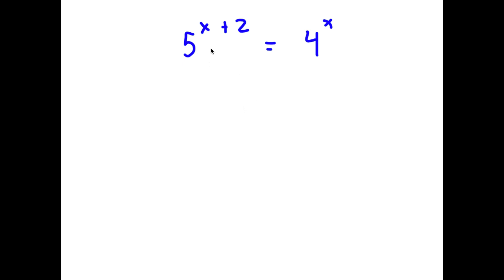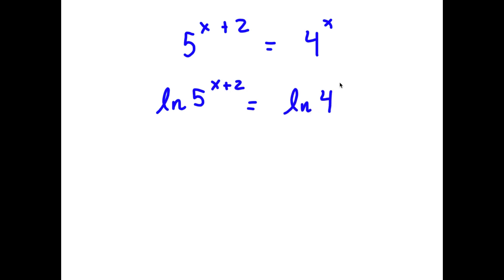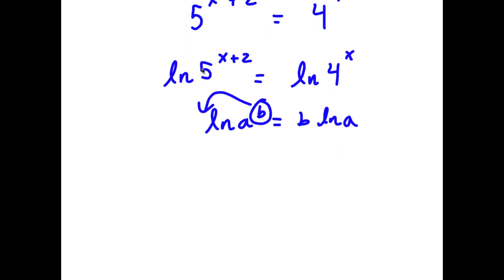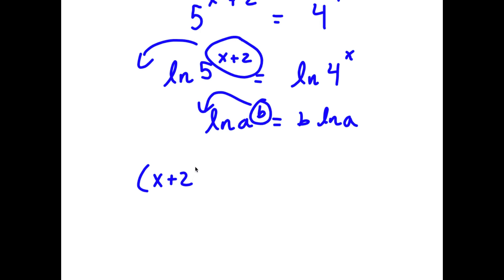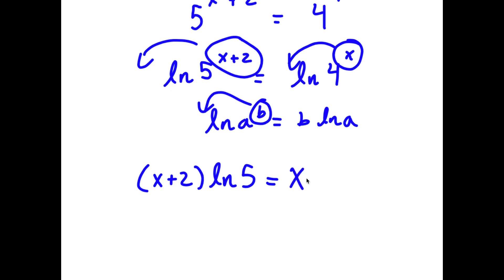In this problem, I have 5 to the power of x plus 2 is equal to 4 to the power of x. To solve this, I'm going to take the natural log on both sides. So now I have ln of 5 to the power of x plus 2 equals ln of 4 to the power of x. Using the rule ln of a to the power of b equals b times ln a, I can move the exponents to the front. So x plus 2 times ln 5 equals x times ln 4.